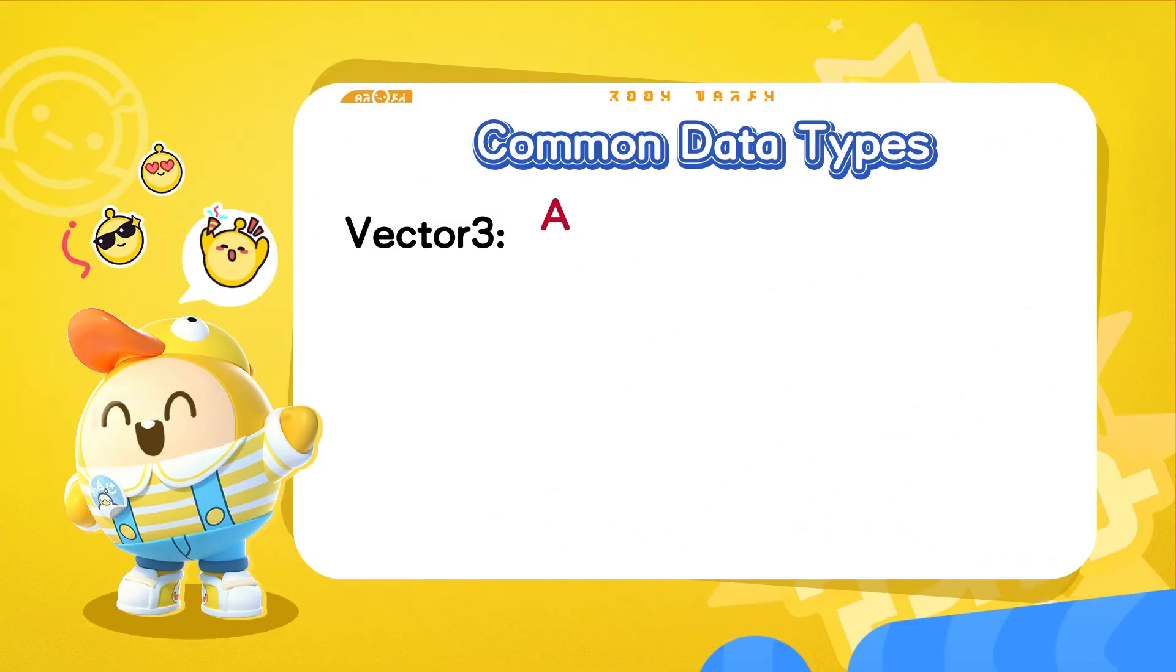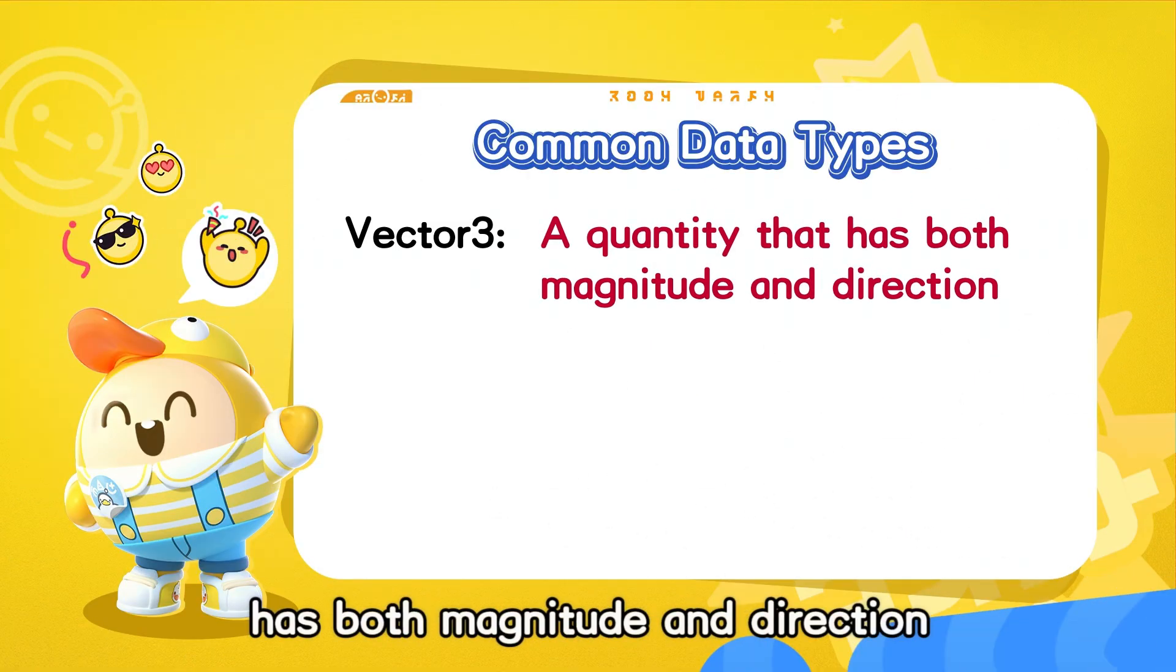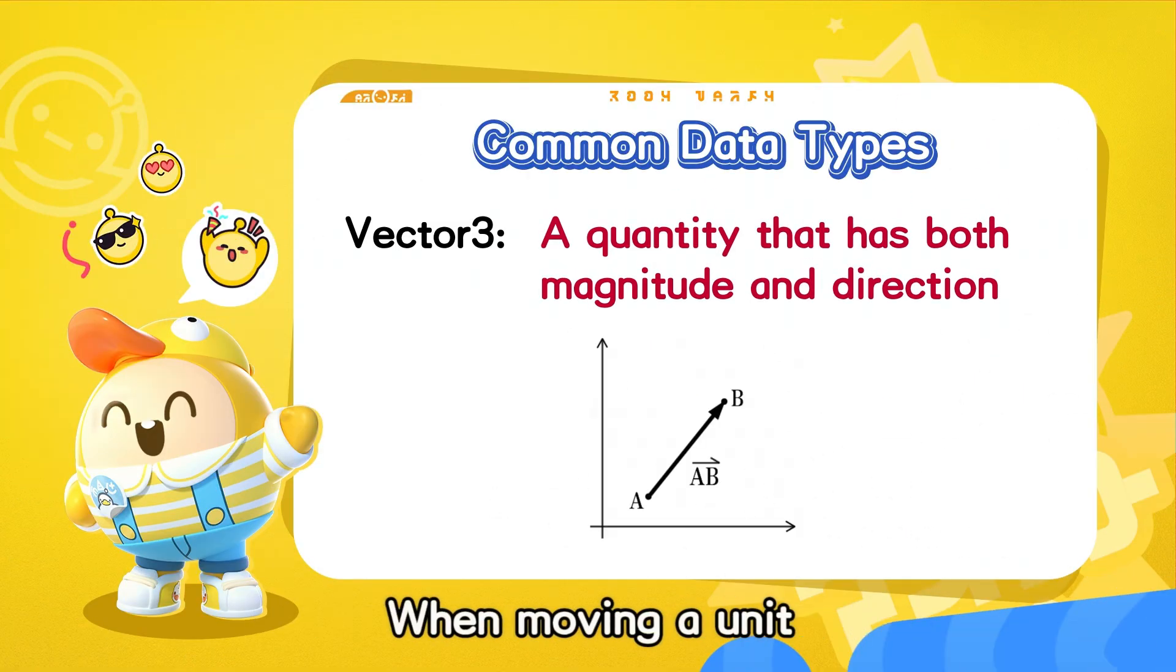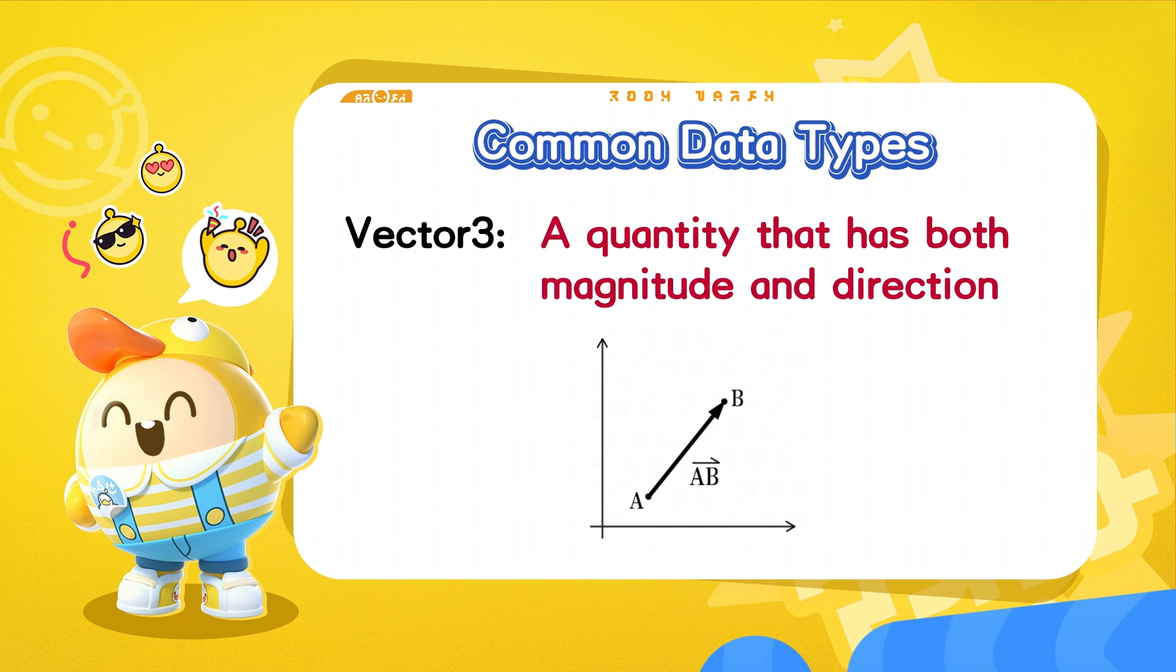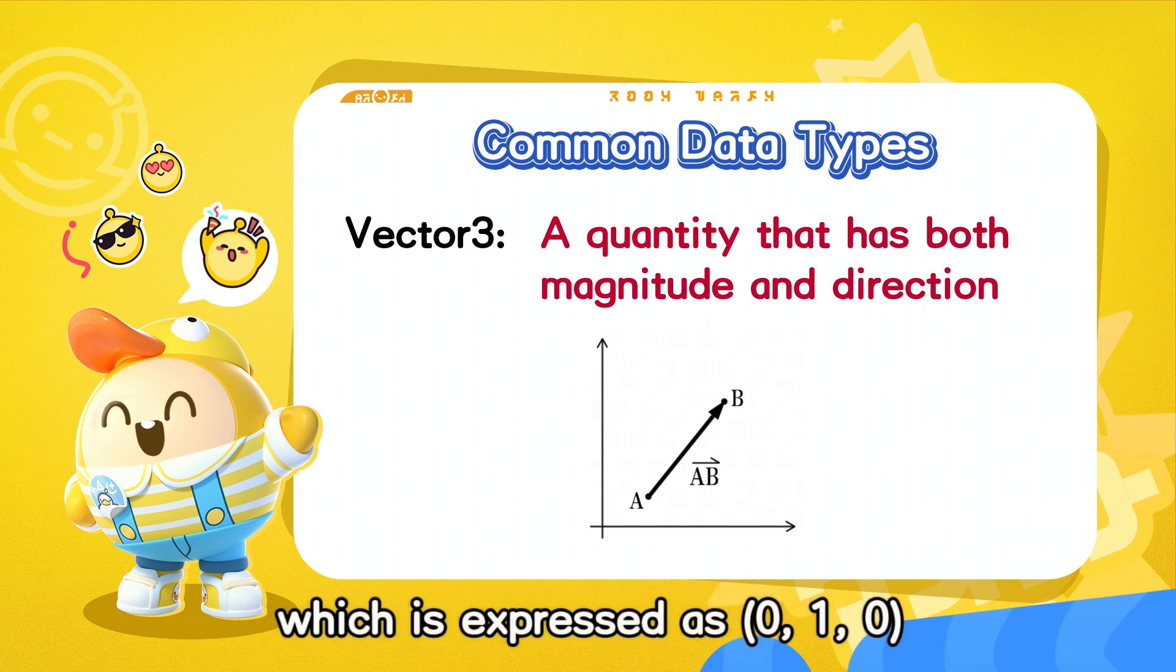Vector3: A quantity that has both magnitude and direction. When moving a unit, we need to precisely describe in which direction it moves and how far. For example, if we need a unit to move up, to make the system understand, it must be clearly stated as move up one unit along the y-axis, which is expressed as zero, one, zero.